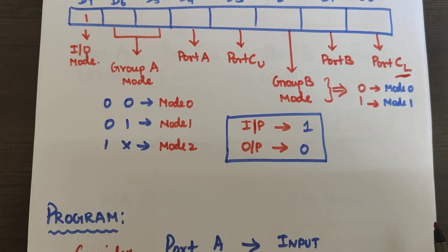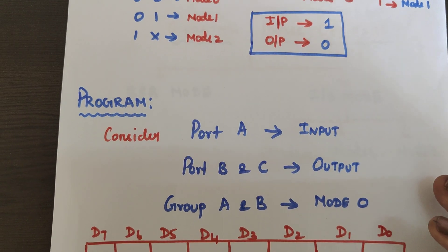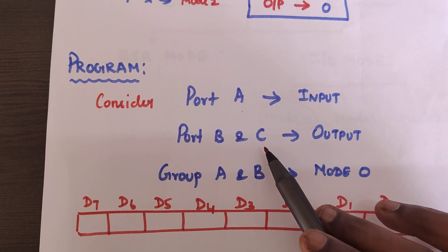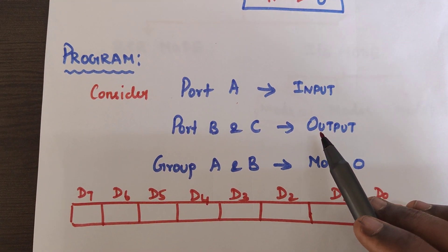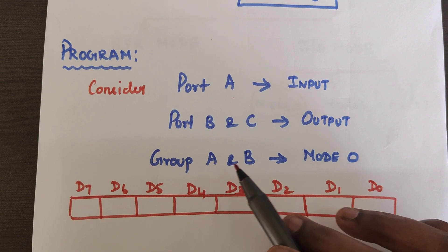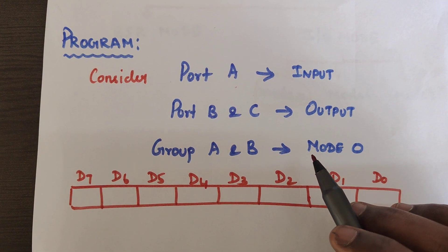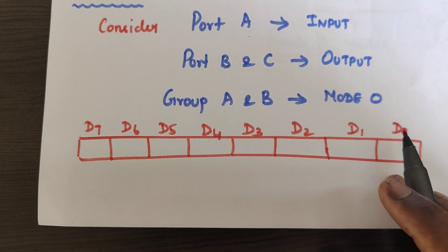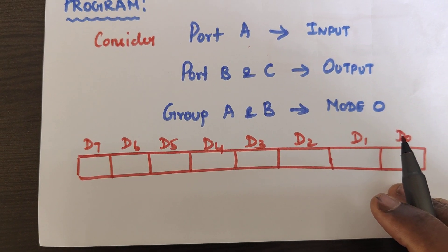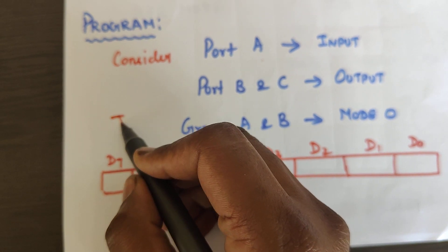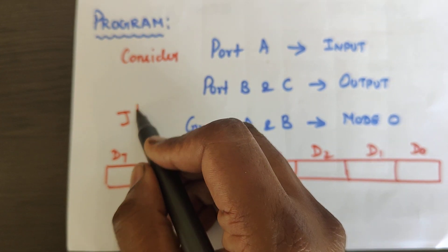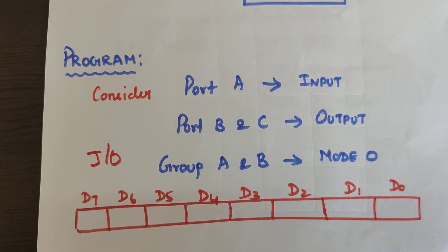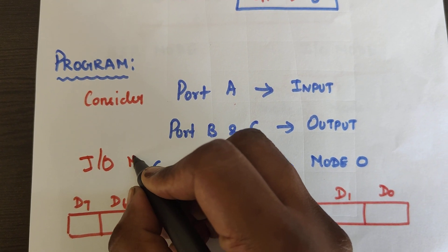To write the program, consider that port A will act as the input, and port B and port C will act as outputs. Both group A and group B will operate in mode 0. The first step is to initialize the 8255 by writing the program for IO mode.